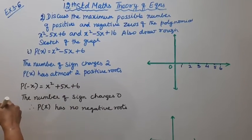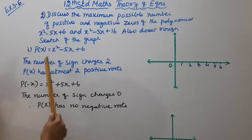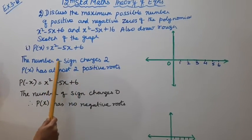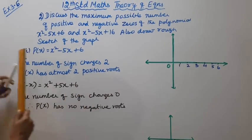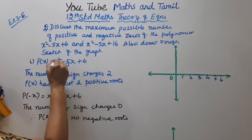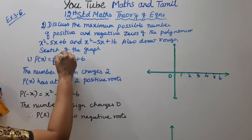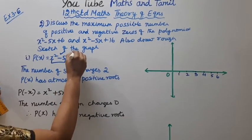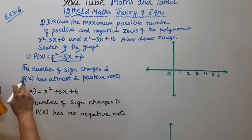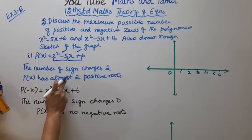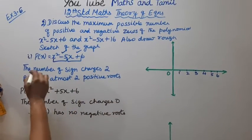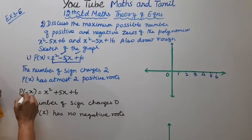The number of sign changes for P(x) = x² - 5x + 6: the signs are plus, minus, plus. The number of sign changes is 2. Therefore, P(x) has at most 2 positive roots.